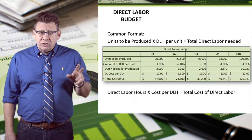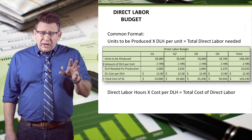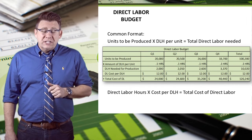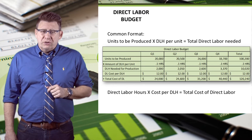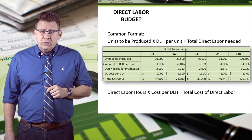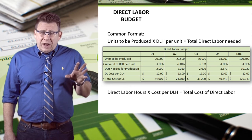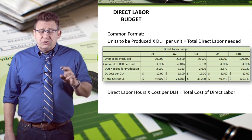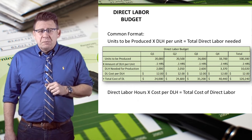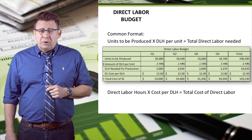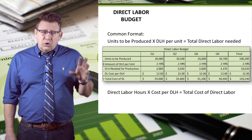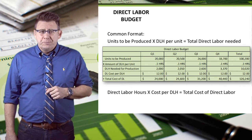That results in direct labor hours needed for production. We can multiply that amount by the average cost per direct labor hour to arrive at the total cost of direct labor.